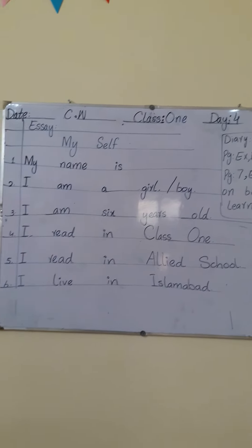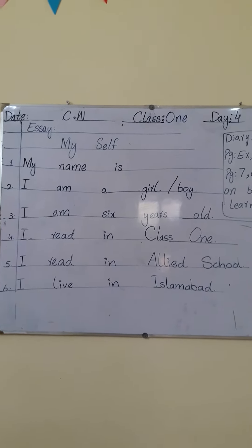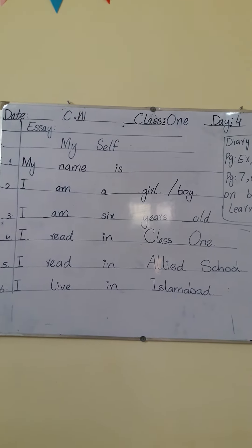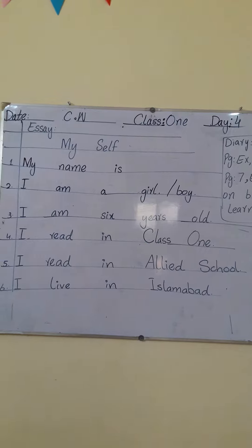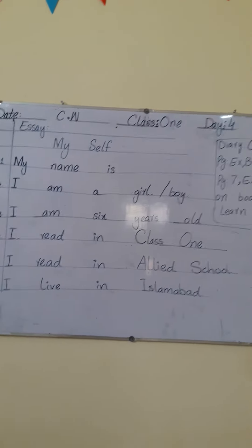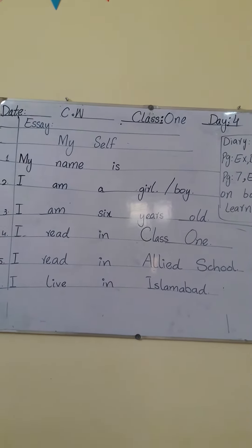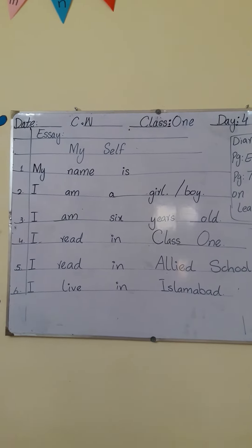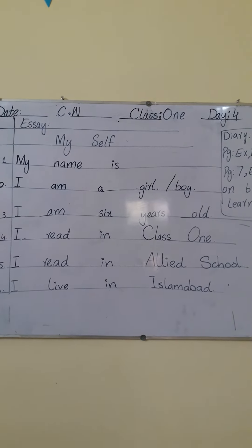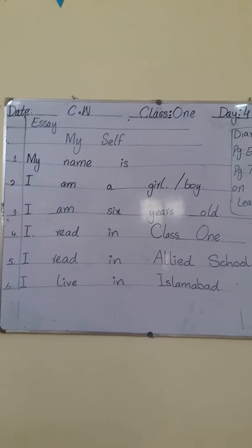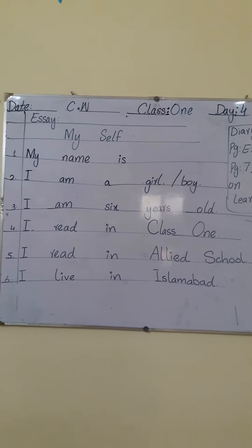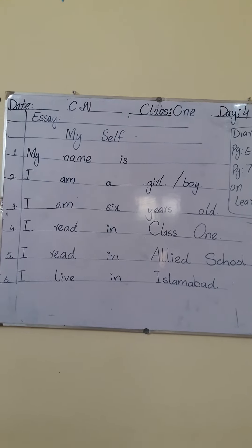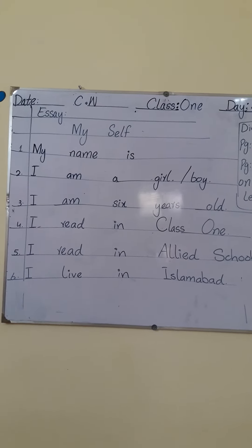Write date and CW, then do an essay in your English B notebook. The essay title is 'Myself – Introduce Yourself.' Answer these questions: How old are you? What is your name? Are you a girl or a boy? In which class do you read? Where do you live? What is your school name? For the first one, write: My name is [your name].